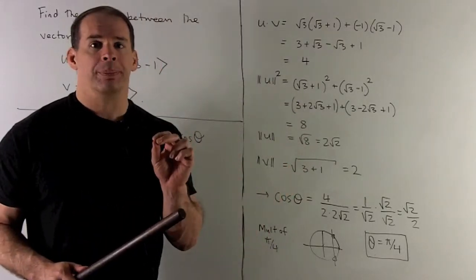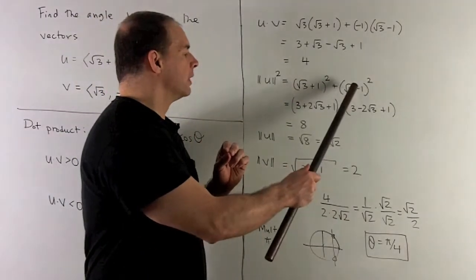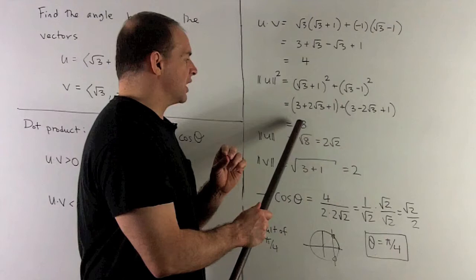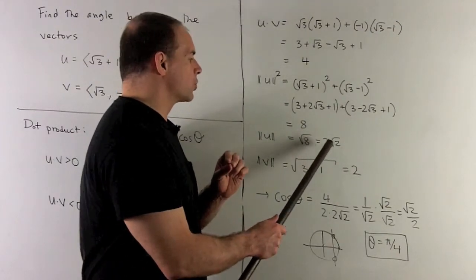For u squared, same idea. We take each entry, square it, add, and that gives us 8. So for the length of u, I wind up getting √8 or 2√2.